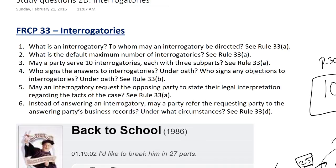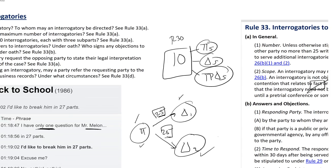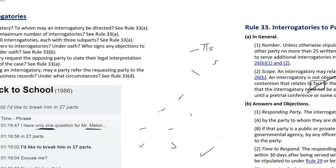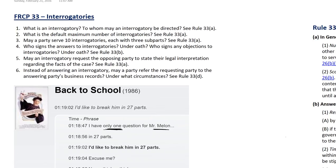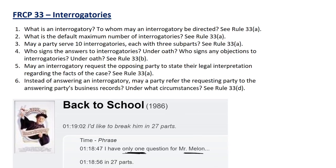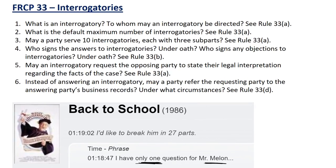Question six: instead of answering an interrogatory, may a party merely refer the requesting party to the answering party's business records? Under what circumstances? That's Rule 33D.